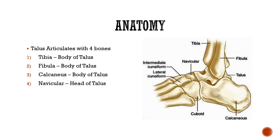Continuing the anatomy: the talus articulates with some important bones — tibia, fibula, calcaneus, and the navicular. You can see here: the talus articulates with the tibia here, with the calcaneum here, with the fibula here, and with the navicular here.